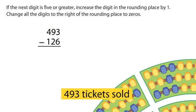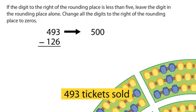If the next digit is 5 or greater, increase the digit in the rounding place by 1 and change all the digits to the right of the rounding place to zeros. If the digit to the right of the rounding place is less than 5, leave the digit in the rounding place alone and change all the digits to the right of the rounding place to zeros.